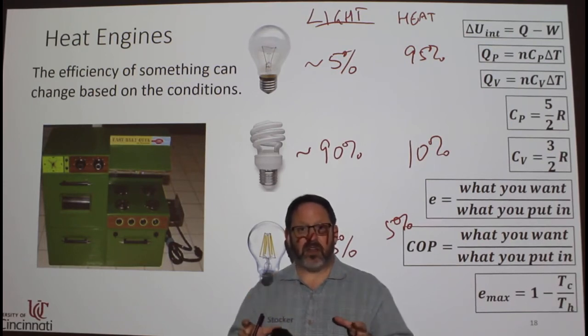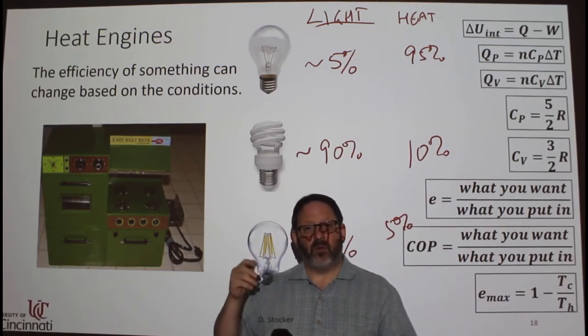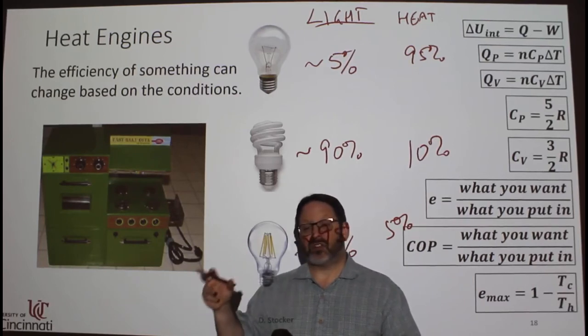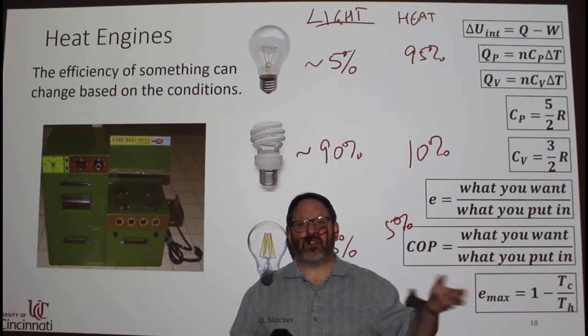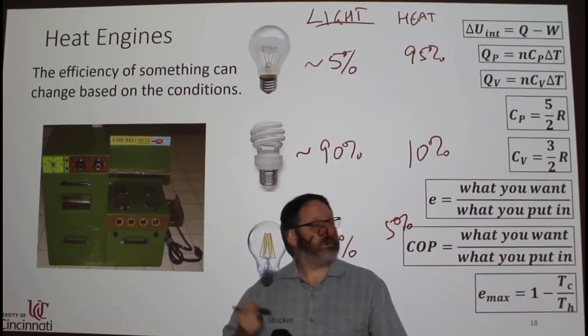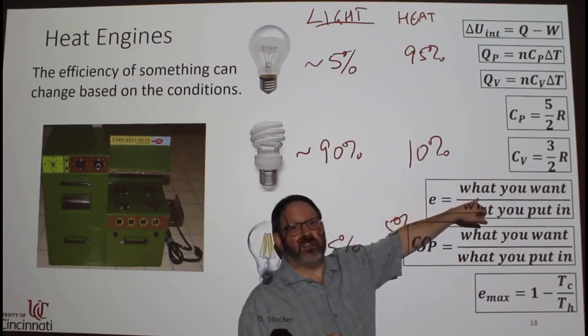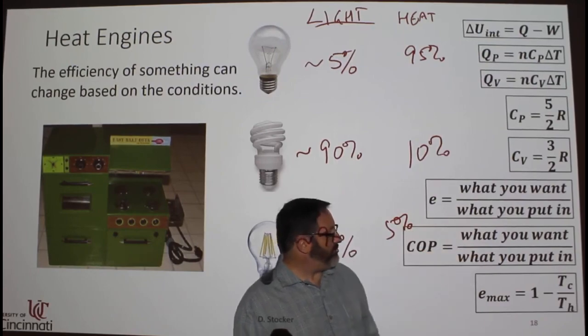When you try and arrange your mathematical models to figure out efficiency of something, remember to think of what is it that I'm trying to produce with this particular machine. Am I trying to make something cold? Am I trying to make something hot? Am I trying to make something move? What am I trying to do with it? That will tell you what goes here and then what you want. And then what you put in goes on the bottom.